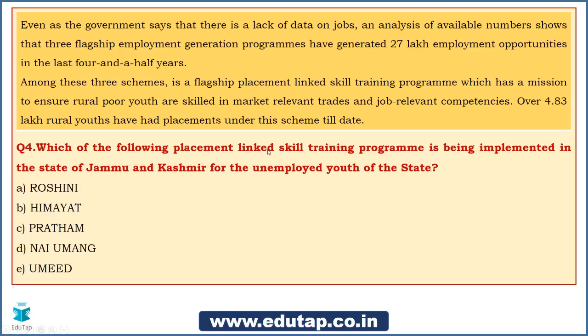The fourth question: which placement-linked skill training program is being implemented in the state of Jammu and Kashmir for the unemployed youth of the state? Chitransh says B — Himayat. Dhruv also says Himayat. Tanuja says A — Roshni. Swapnil says B — Himayat. Badri also goes for Himayat. Most of you are saying Himayat.